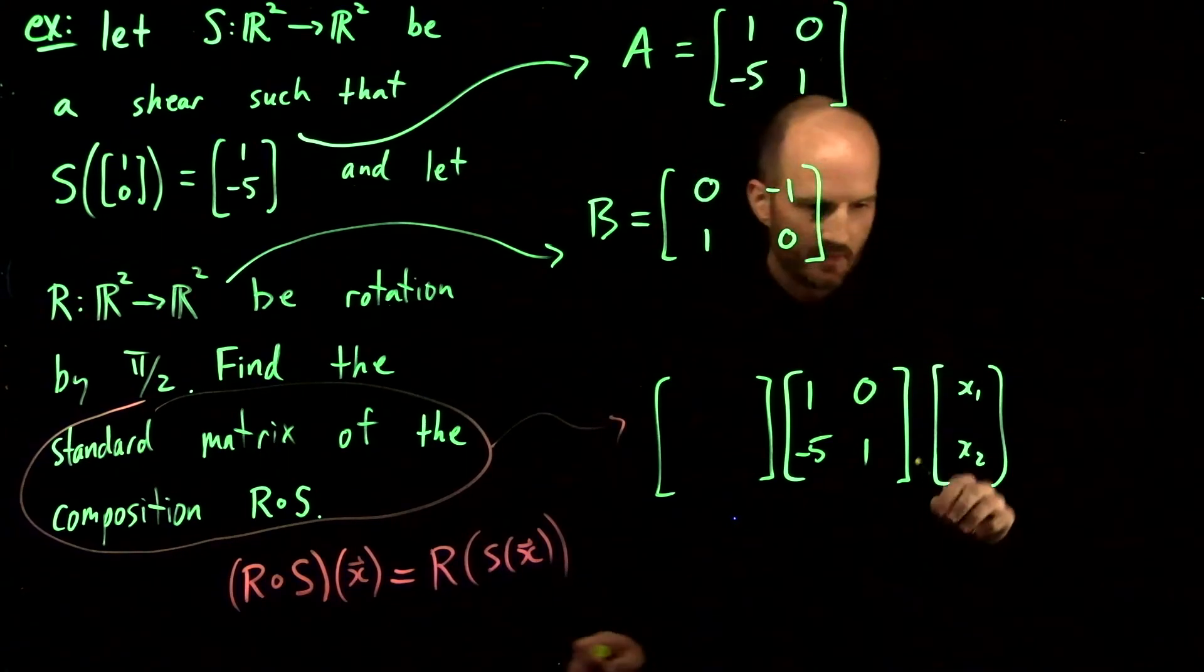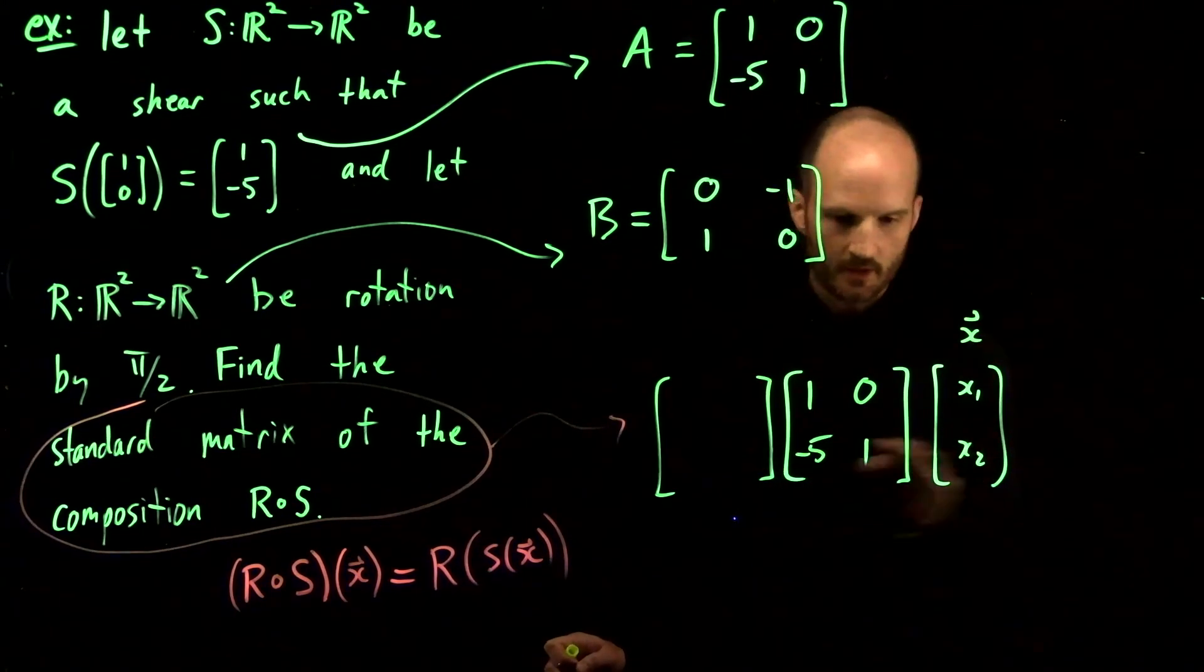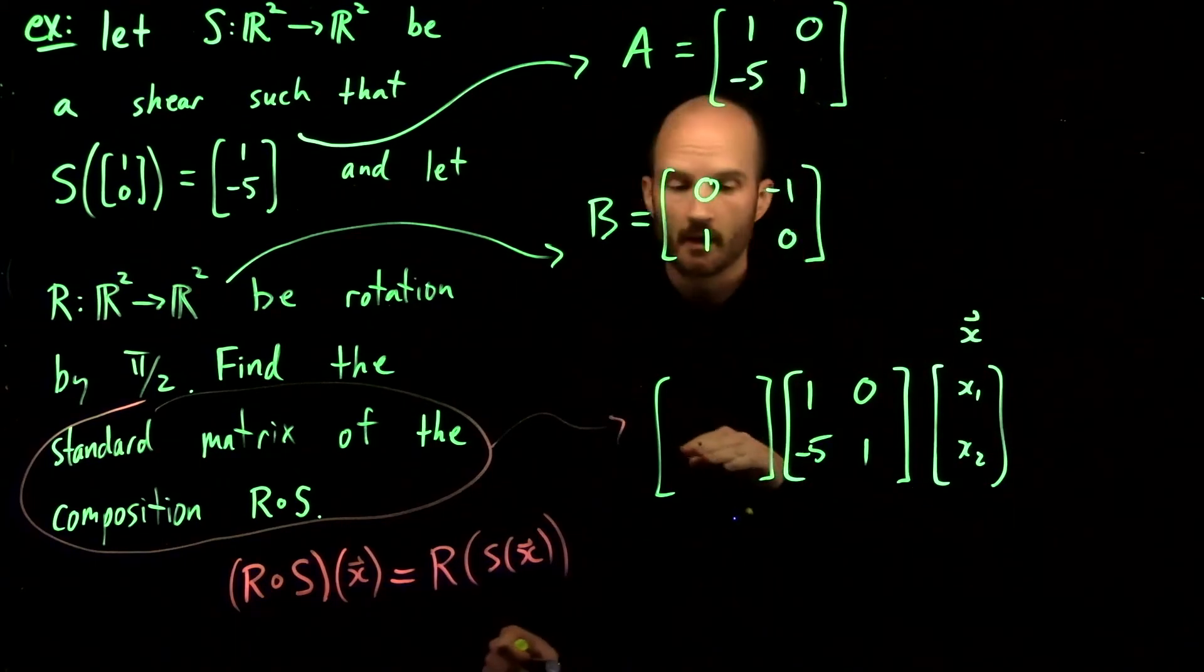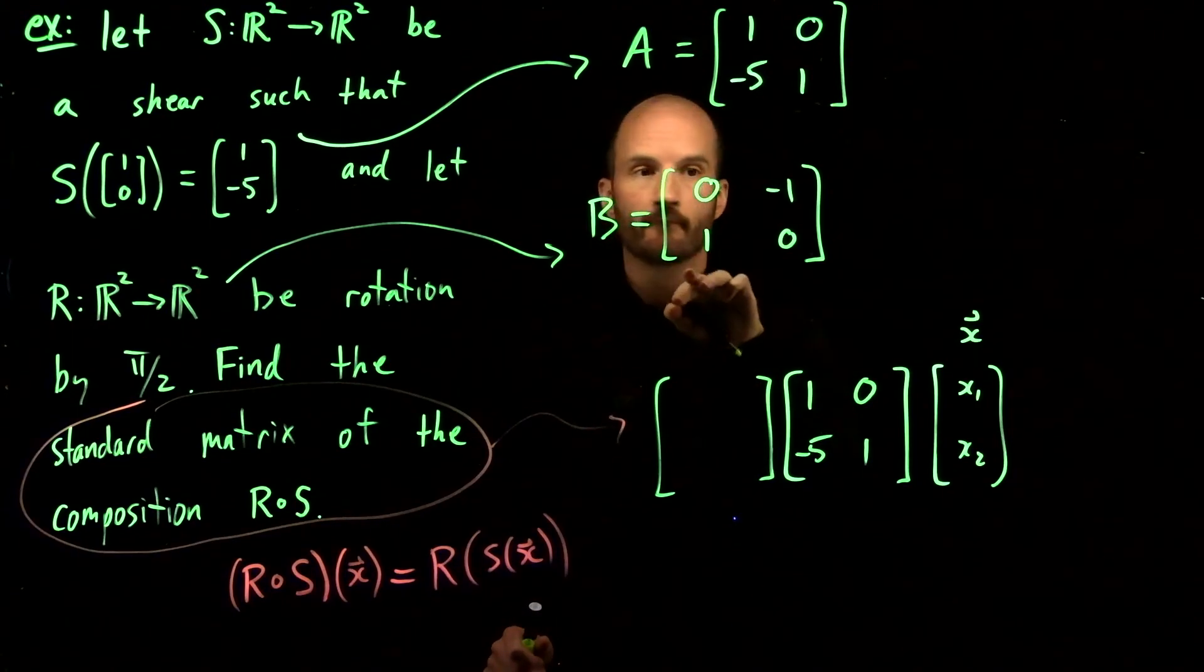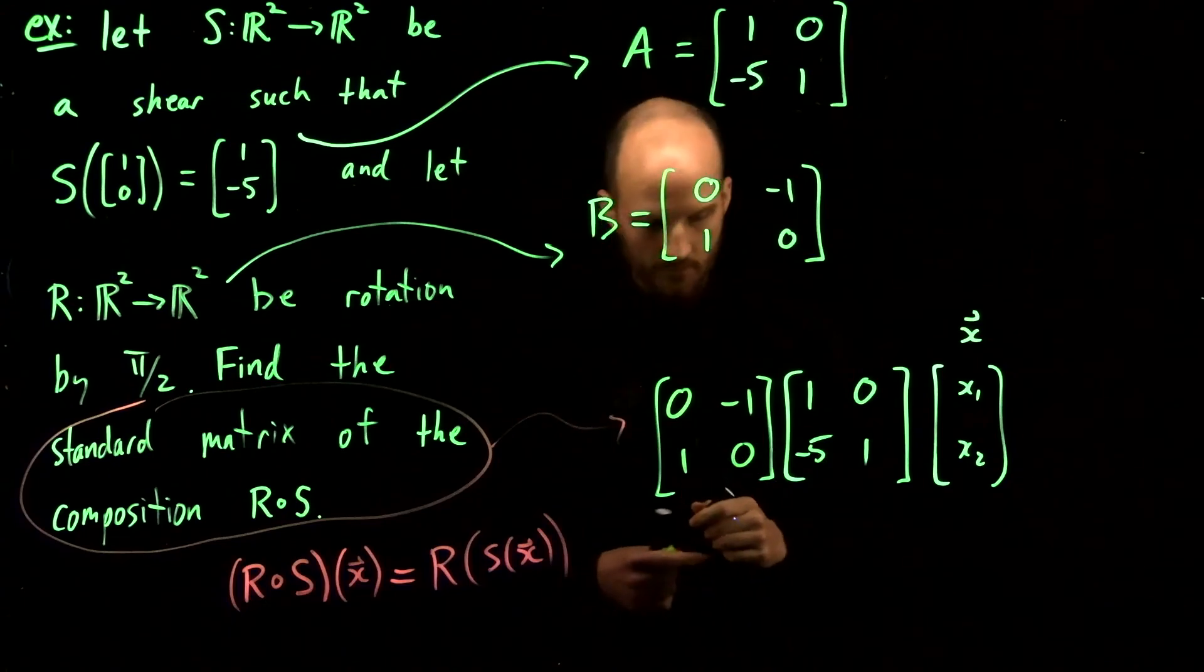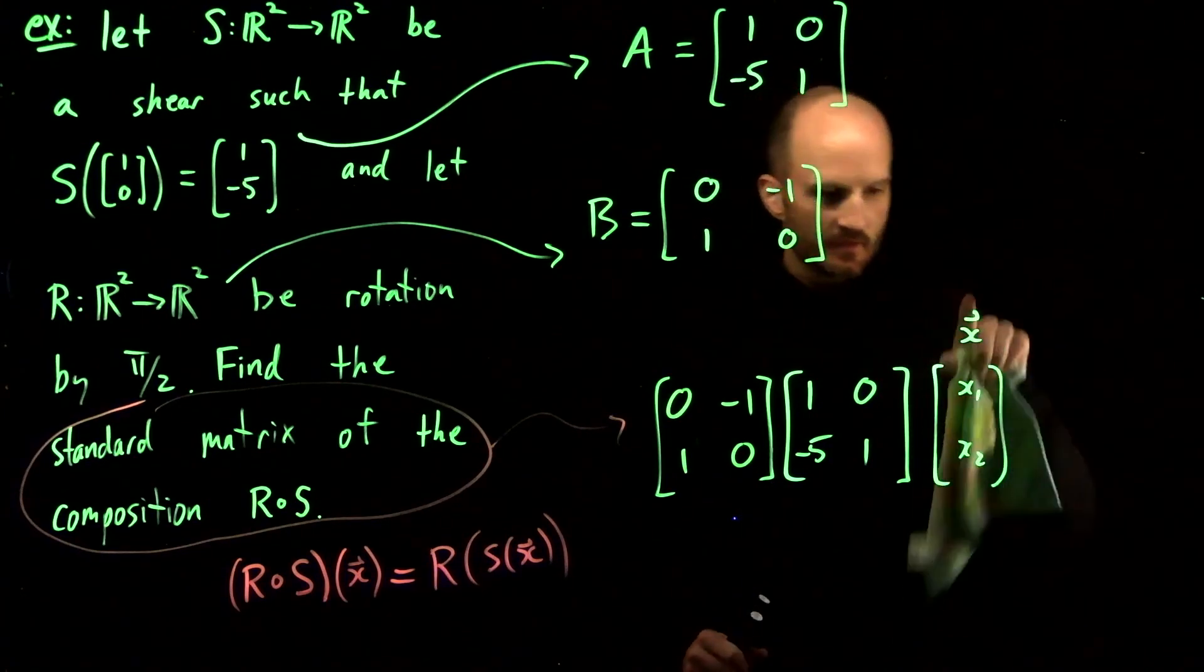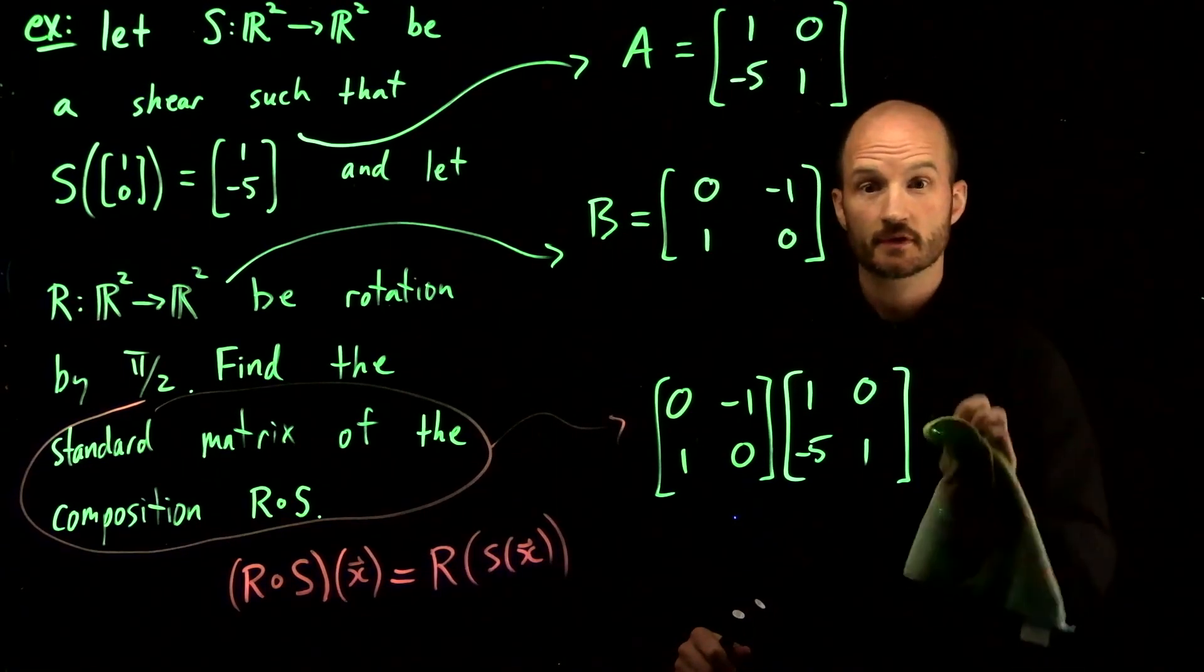If I have a vector x, I'll do this matrix times this vector first. Then the result, I'll multiply by my matrix here, which represents R. Perhaps a little confusing, but this is what we get. This helps me keep straight which matrix should go first. It does matter.